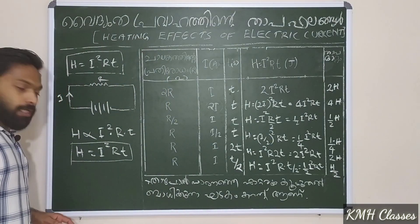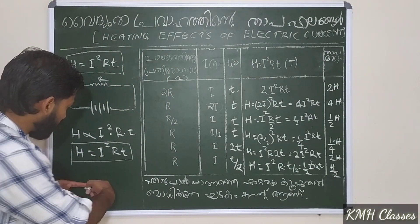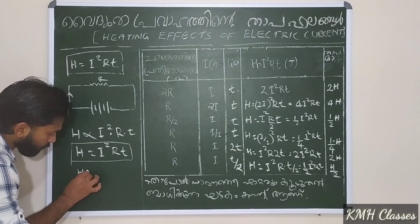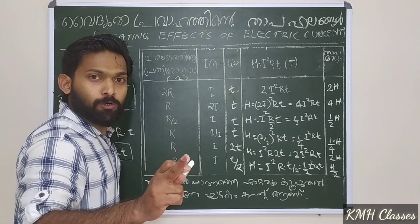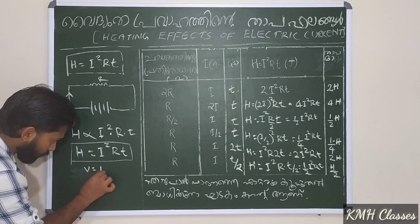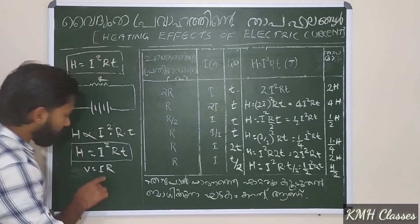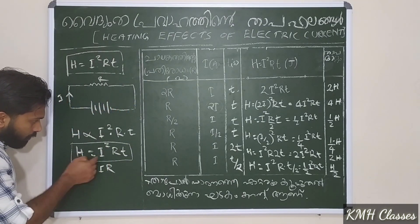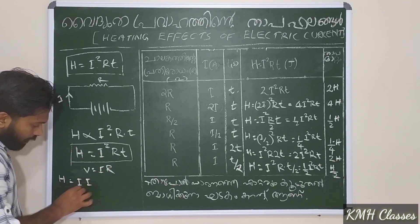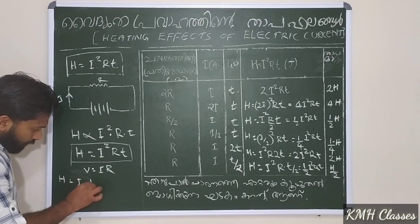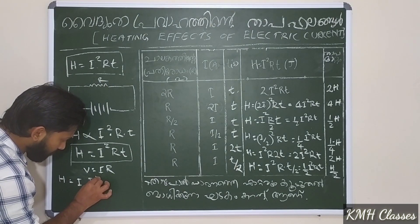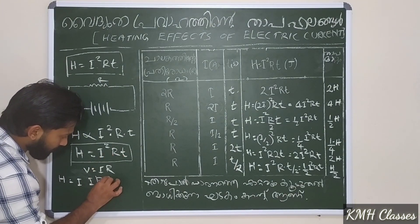H is equal to I squared. We have to know that equation. We can find it in different ways. We know V is equal to IR — Ohm's Law. H is equal to I squared R T. I squared — I squared R T, with more I squared multiplied by R T.